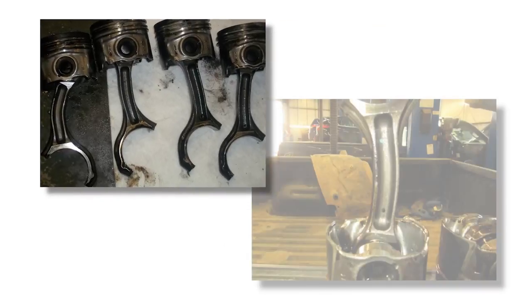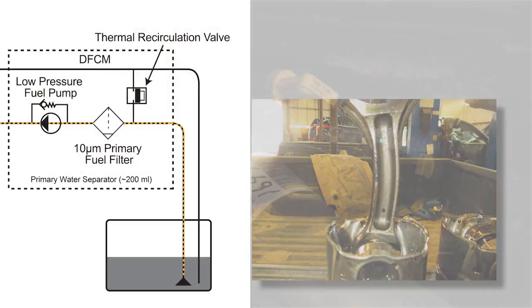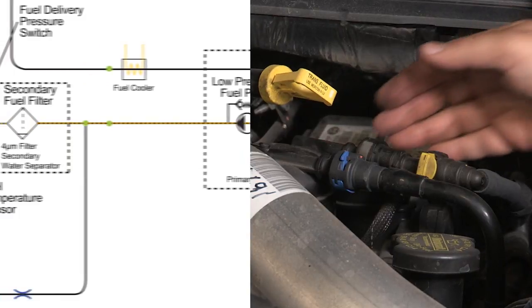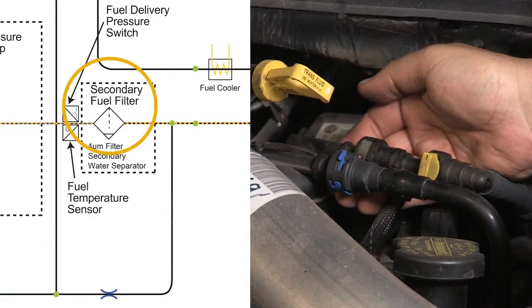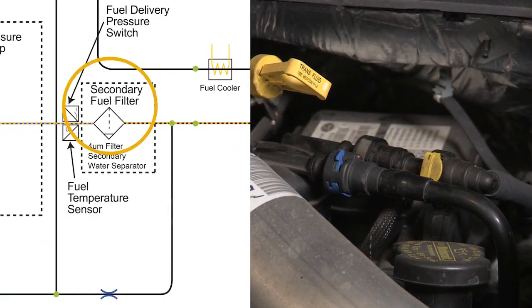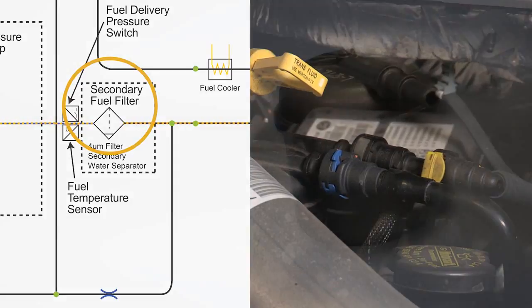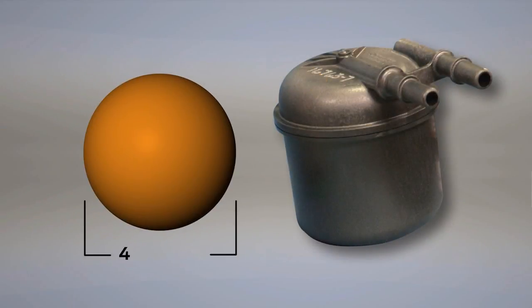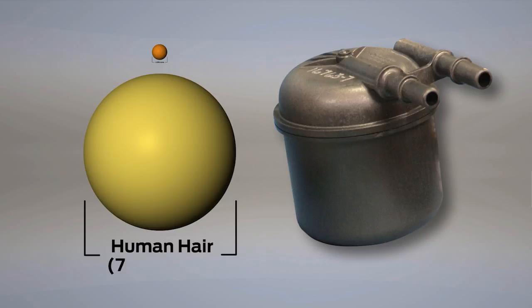all of which can severely damage your engine. Before reaching the injectors, the fuel also travels through a secondary fuel filter mounted on top of the engine. This filter can capture contaminants as small as 4 microns or approximately 1/20th the diameter of a human hair and will filter out any extra debris or water that made it past the primary fuel filter.